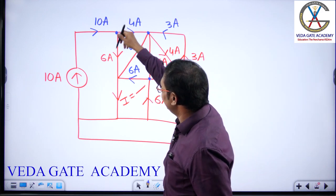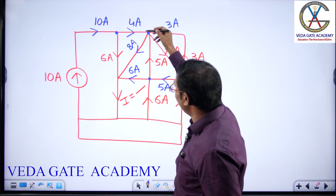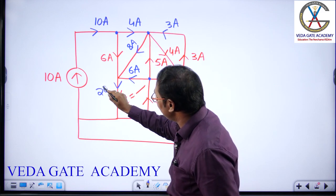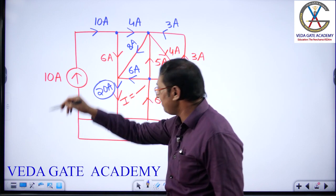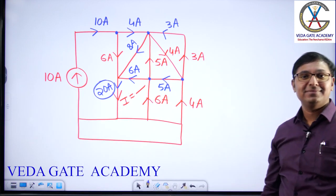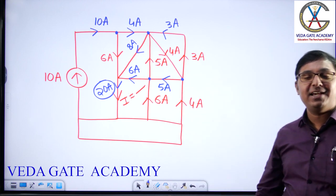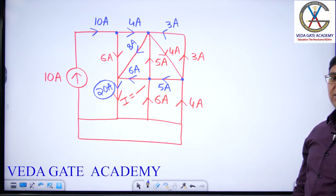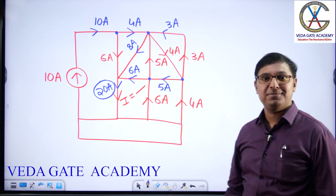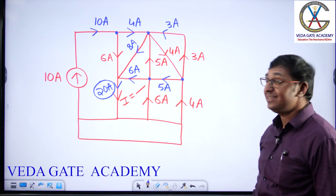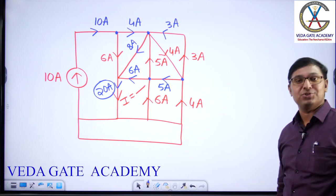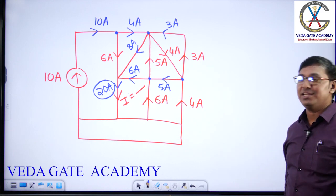6 amps coming, 6 amps coming, 6 amps coming, 8 amps coming — how much current should come this way? 20 amps. Finally, what is the value of I? 20 amperes. Analyzing like this, is it easy or difficult? Easy. But is this the better approach? No — it's the worst approach.